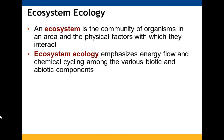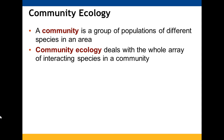Ecosystem ecology is focused specifically on an individual ecosystem — the community of organisms in a specific area and the physical, abiotic factors with which they interact. Both biotic and abiotic components are examined, including energy flow and chemical cycling. A community is populations of different species in a specific area, dealing with the interactions between those species.